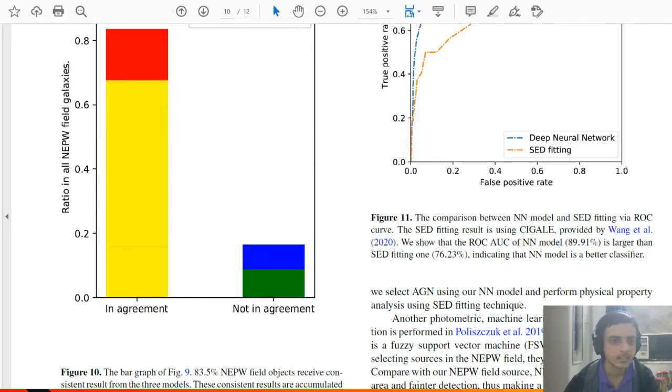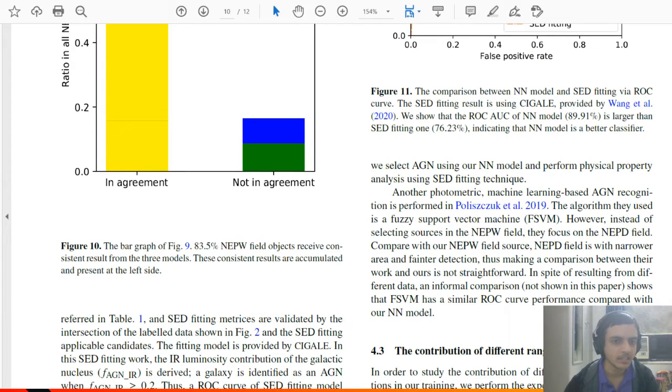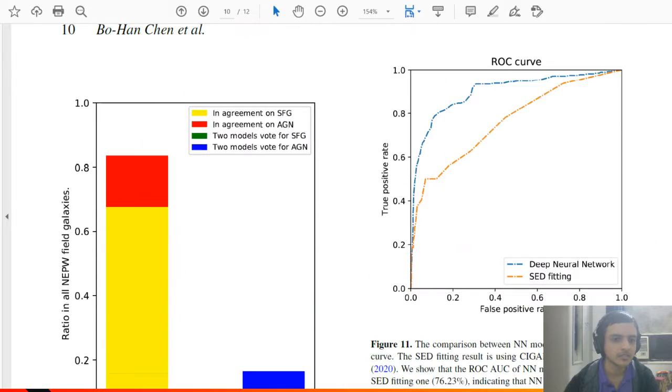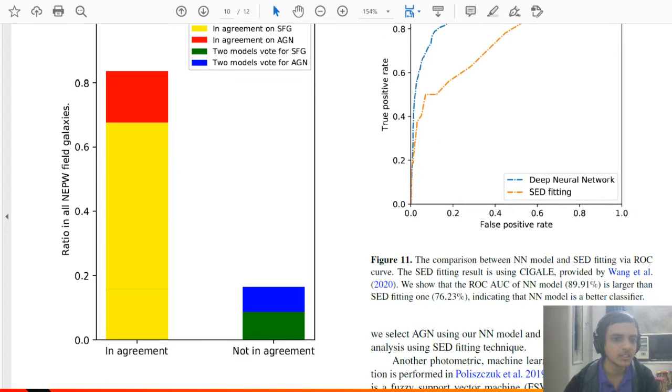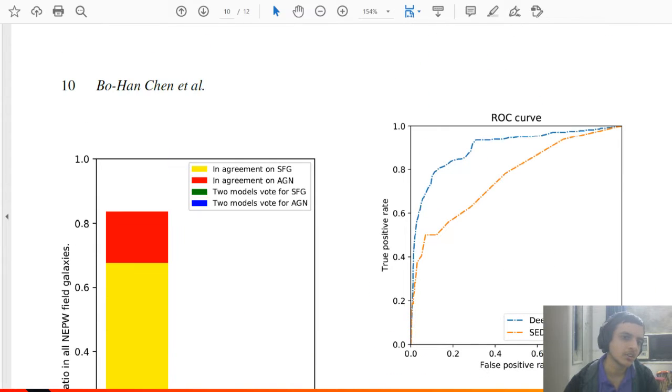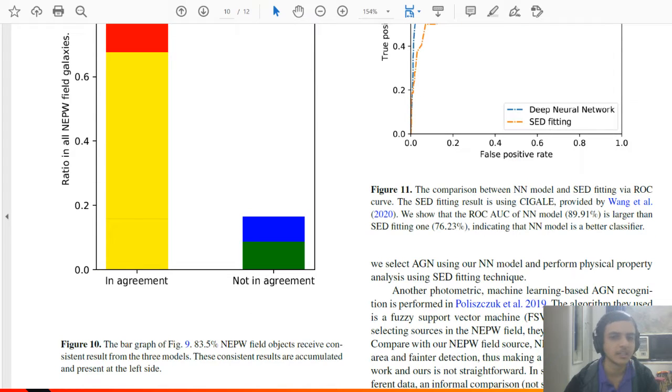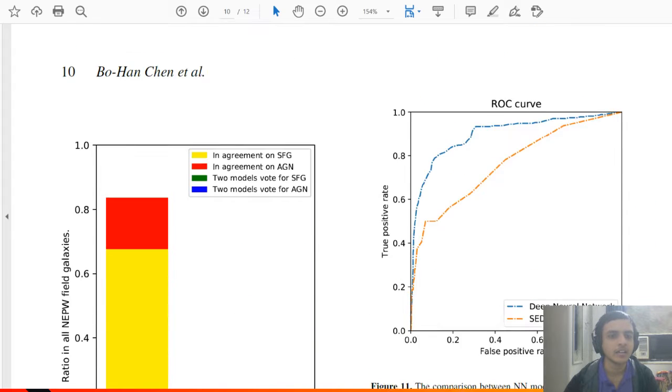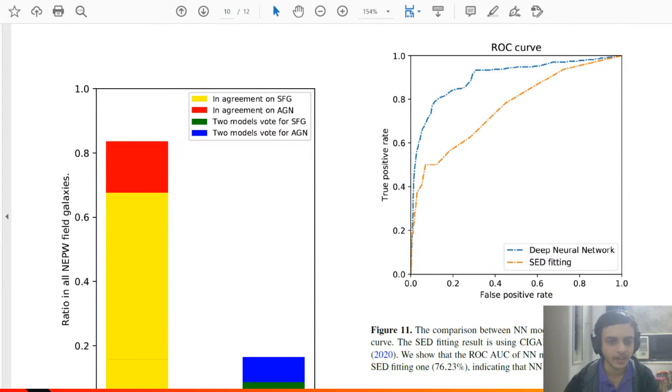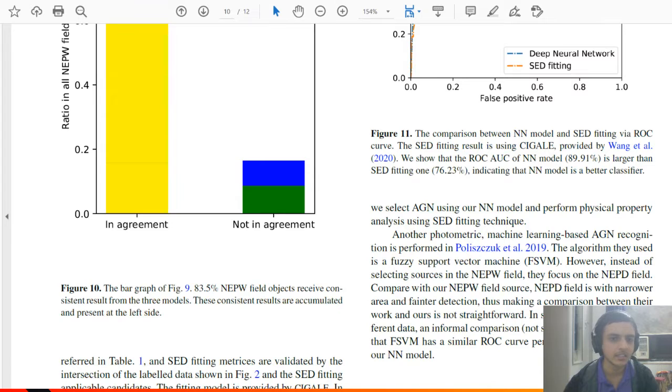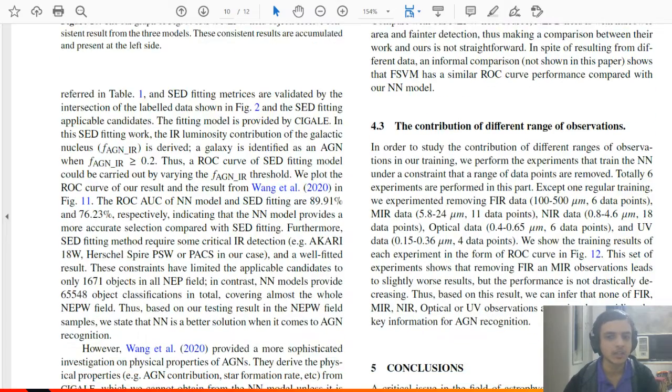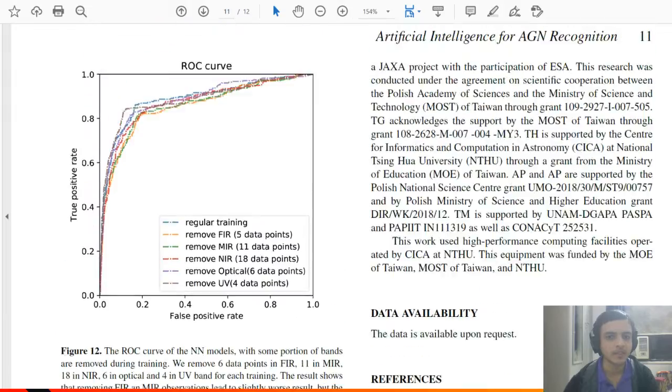This is another statistical graph that they had so that they show that for all the three models, ratio of galaxies and so on. Even I didn't understand this clearly, but this is basically, they are just trying to say, this is AGN and this is SFG, and all this radiative data that they're getting. These all field objects are consistent across the three models that they had.